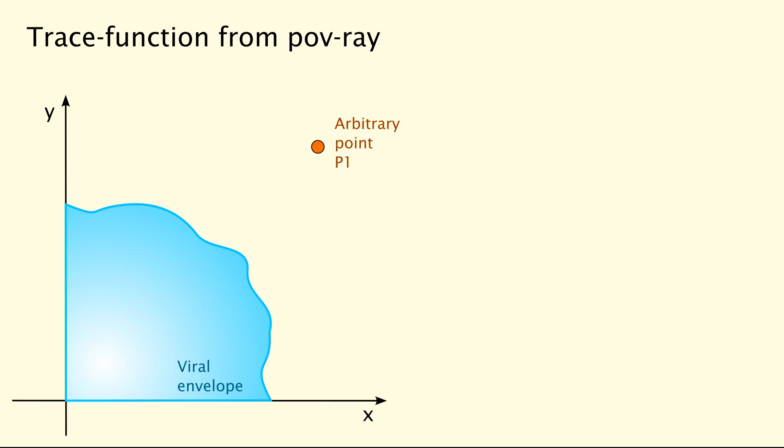This trace function needs three different things. The position vector of one of the points just produced, an empty vector where POV-Ray can store the normal vector, and the vector pointing from the point in question towards the center of the viral envelope. Since this center is more or less identical with the origin, you can simply take the negative position vector for this third task.